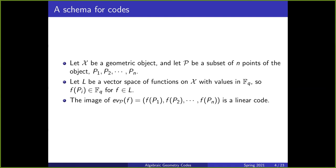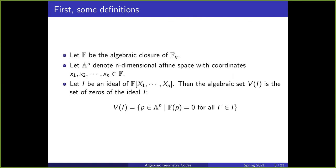Now we're going to talk about what kind of geometric objects we'll be using. Let's take the algebraic closure of the finite field Fq and call it F. We're working over this closure because algebraic geometry only fully works over algebraically closed fields, and we have to make sure that every polynomial has all coefficients in Fq and every point has all components in Fq. When we actually construct a code, we're working in Fq.